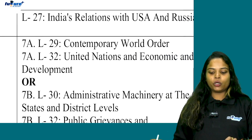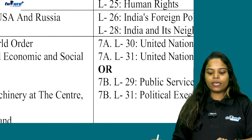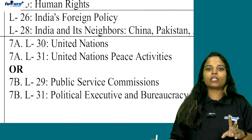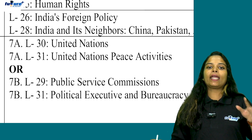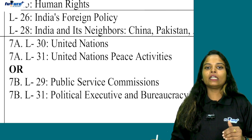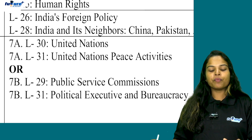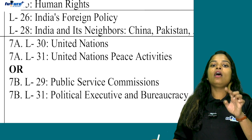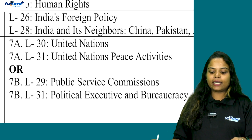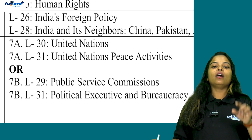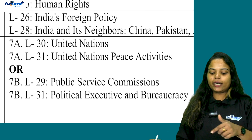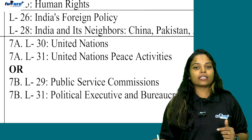You can learn one module. In two modules, there are two chapters. If you choose A, you can learn two chapters. If you choose B, you can learn two chapters. Chapter 30 is the United Nations. Chapter 31 is United Nations Peace Activities.